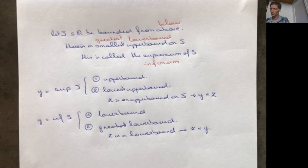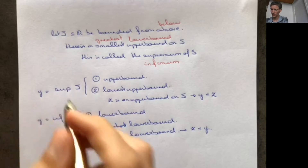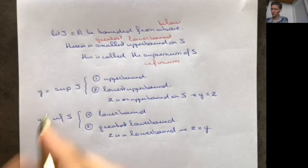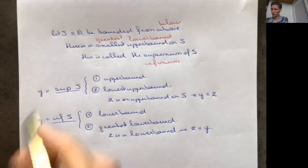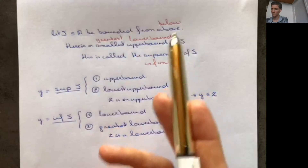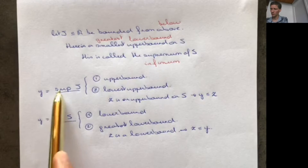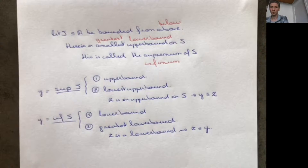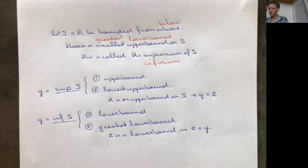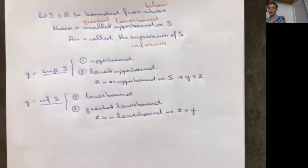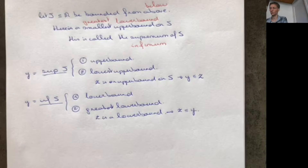That's the definition of a supremum and infimum. One important thing to notice is that the supremum and infimum exist if and only if S is bounded: the supremum exists whenever S is bounded from above, and the infimum exists whenever S is bounded from below. If S is not bounded from above, there's no upper bound so there also cannot be any supremum. Likewise, if S is not bounded from below, there can be no infimum.